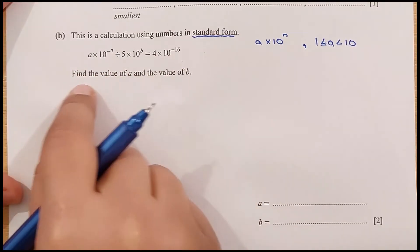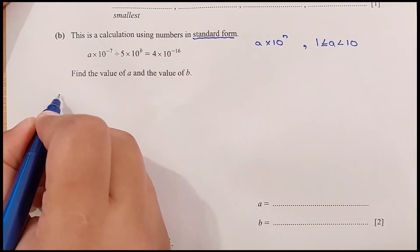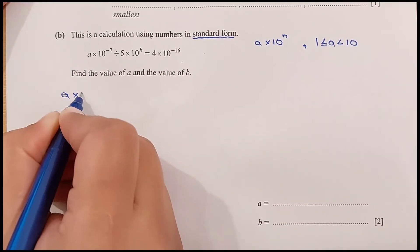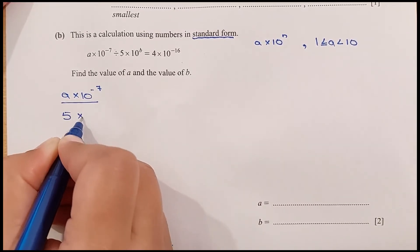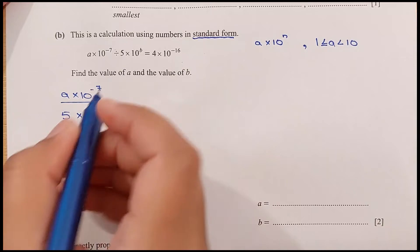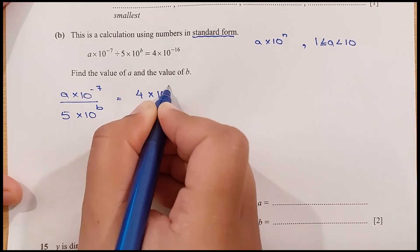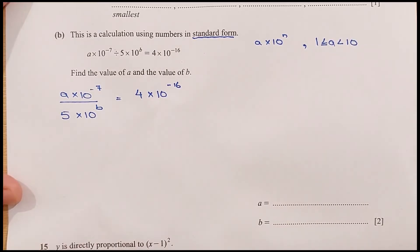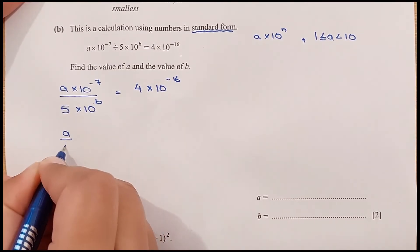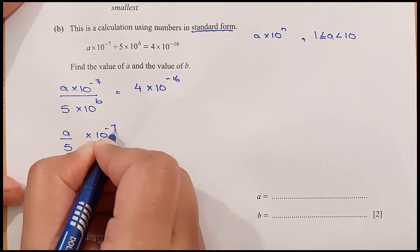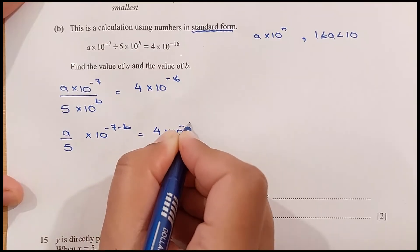We have to find the values of A and B. So let me simplify this: A times 10 exponent minus 7, divided by 5 times 10 exponent B, equals 4 times 10 exponent negative 16.